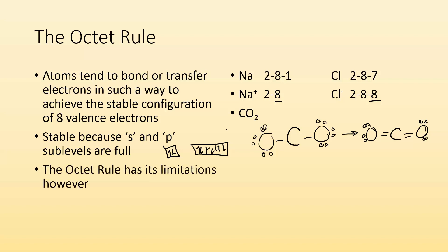So the octet rule has its limitations, however. For example, if we took a look at BH3, that's a total of six valence electrons that we can work with because B has three, each H has one. So how am I going to draw that? B bonded to an H, bonded to an H, bonded to the H. These Hs only have two, but we know that about hydrogen. But then even this boron, it only has six. But this is the best Lewis structure we can come up with for BH3.